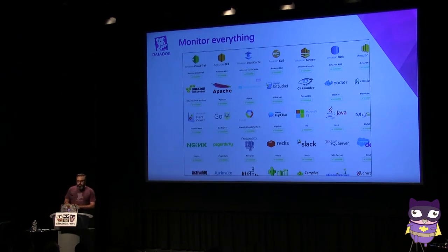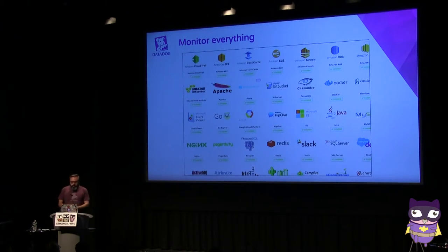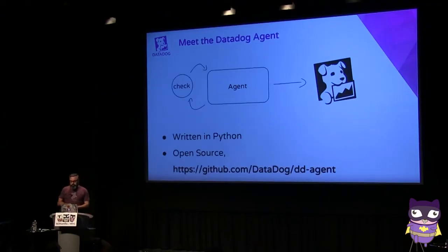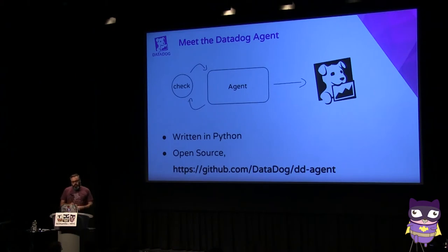This is a subset of what we call integrations — softwares like databases and services that we can collect metrics from. For something like 75 of those integrations, they are implemented in Python and run by our agent. The agent runs as a sort of daemon. Users configure the checks they want to perform. When the agent starts, it loads the Python modules implementing those checks and every 15 seconds it goes through all of them one by one — they collect metrics, send upstream — and then the agent waits another 15 seconds, and so on.